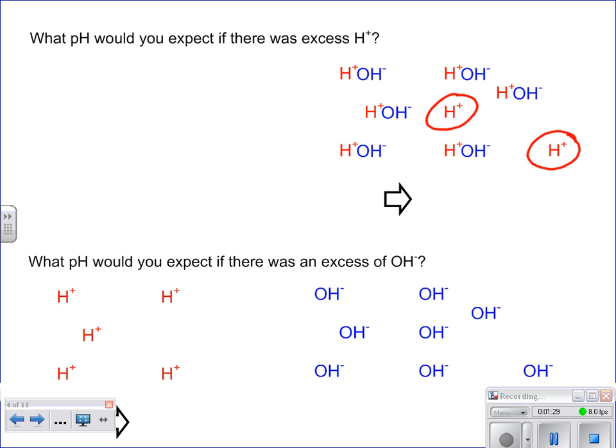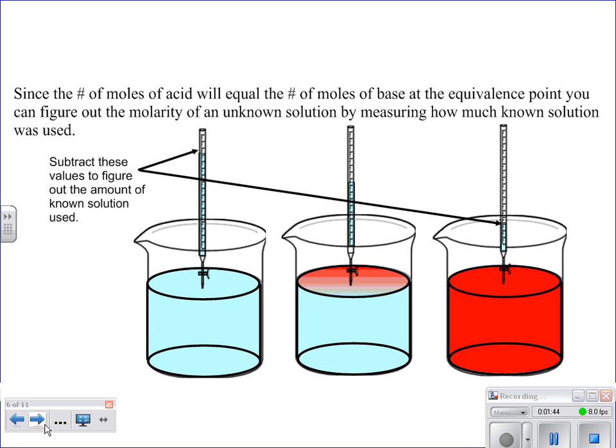But here you can see that sometimes you can have leftover hydrogen ions, in which case it ends up being more acidic. Or you might have leftover hydroxide ions, in which case it would be more basic. So it doesn't always neutralize it completely and get a pH of seven.